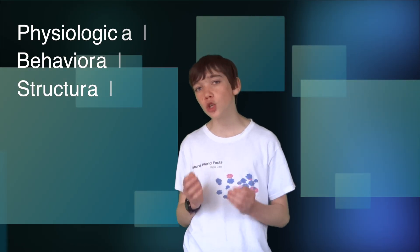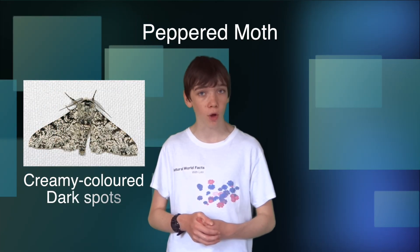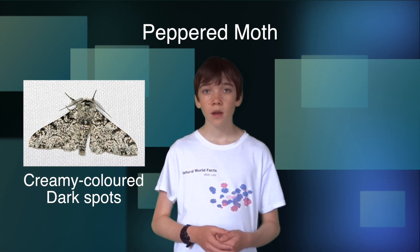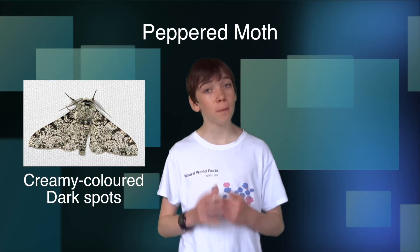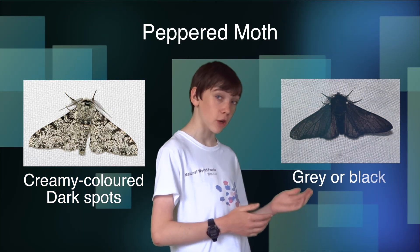Adaptations usually develop in response to a change in the organism's habitat. One example of this happening is the English peppered moth. Before the 19th century, the most common variety of this moth was creamy coloured with dark spots. Only a few peppered moths displayed colouring of grey or black.